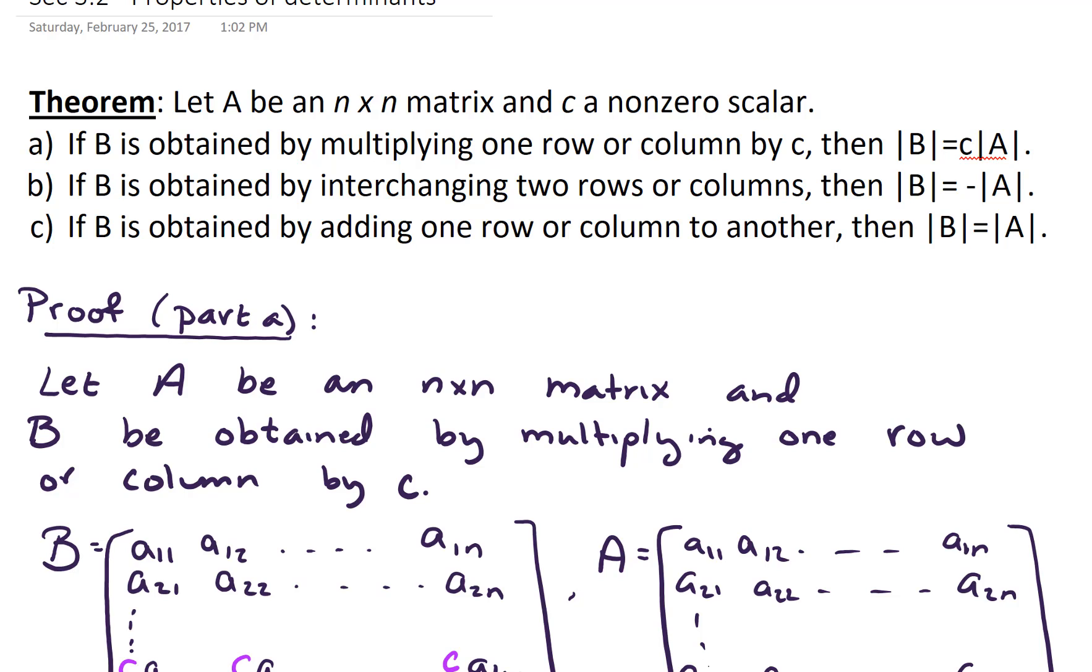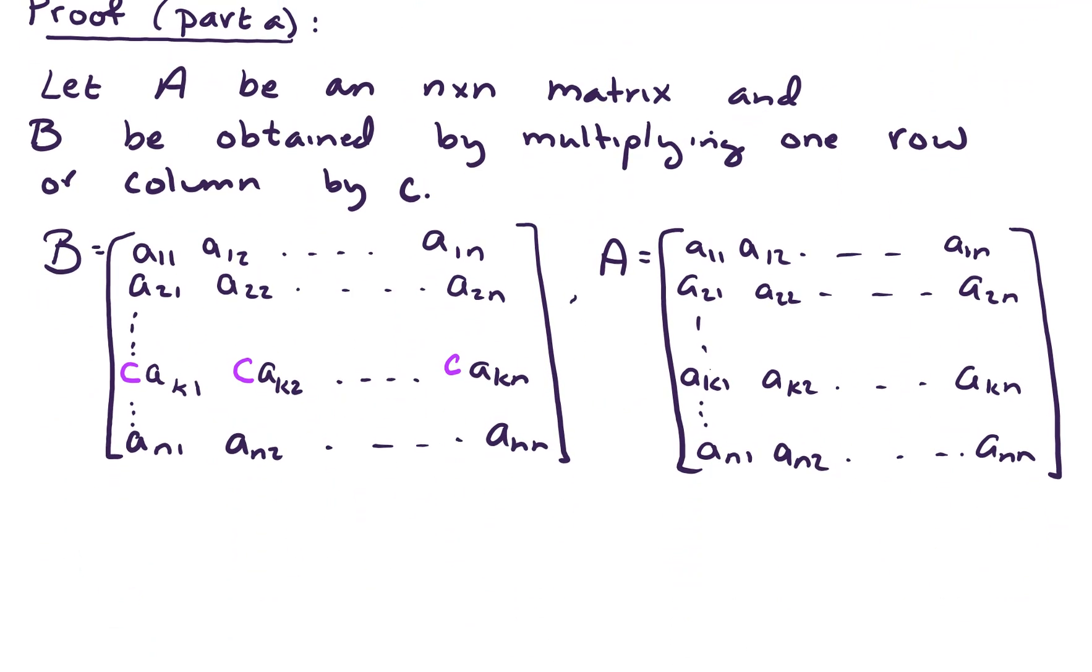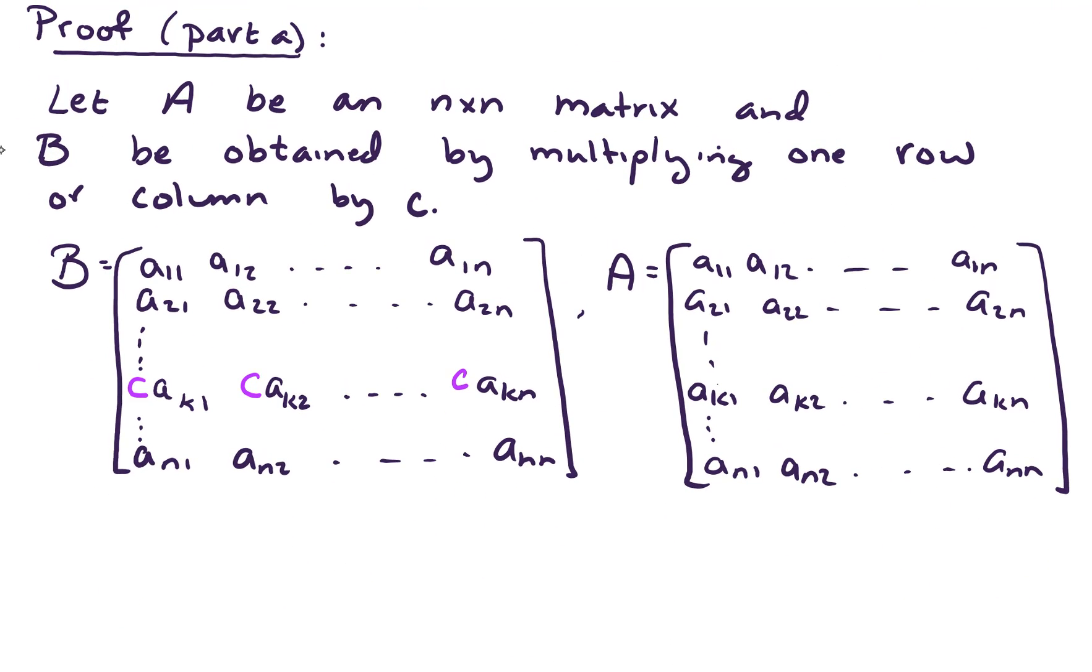So we'll prove part A. To begin, let A be an n by n matrix, and B be obtained by multiplying one row or column by C. So what that gives us is our two matrices. A, of course, is A11, A12, and so forth. And B is obtained by multiplying any row by this non-zero scalar C or any column. But without loss of generality, let's just look at a particular row. I'm going to look at the kth row, so I label that row, row K.